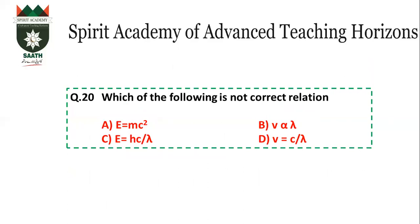Question number 20: Which is not a correct relation? The relation between frequency and wavelength is inverse, not direct. So the incorrect relation is B.